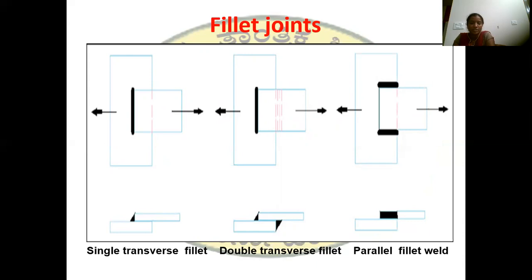These are the fillet joints. The first one is single transverse fillet. Transverse fillet means if the welds are perpendicular to the direction of applied load, that is called a transverse fillet. The first figure shows the single transverse fillet and the second figure shows the double transverse fillet. The third one is parallel fillet weld. Parallel fillet means if the welds are parallel to the direction of applied load, that is called a parallel fillet weld.